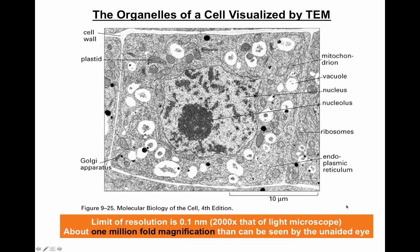At the end, you will obtain an image such as this — organelles within a cell visualized by transmission electron microscopy. With transmission electron microscopy, you get much greater resolution: 0.1 nanometers in distance, which is 2,000-fold better than the light microscope. 10 nanometers is the resolution of the scanning electron microscope, so transmission electron microscopy is even better, giving you about 1 million-fold magnification. Look at the scale — we have a 10 micrometer scale. You can appreciate organelles inside the cell like the nucleus, the nucleolus, ribosomes, the endoplasmic reticulum, and the mitochondria. You can get with transmission electron microscopy a much better resolution of ultra-structures within a cell.